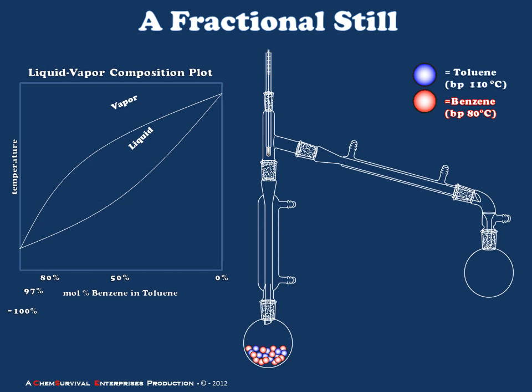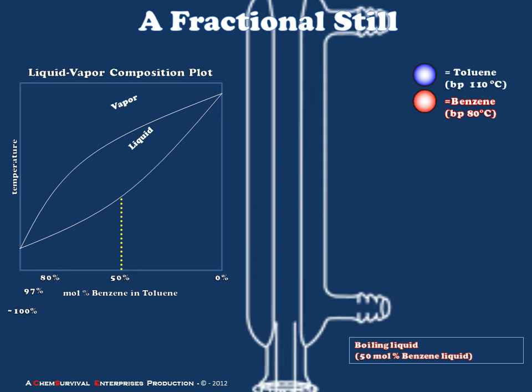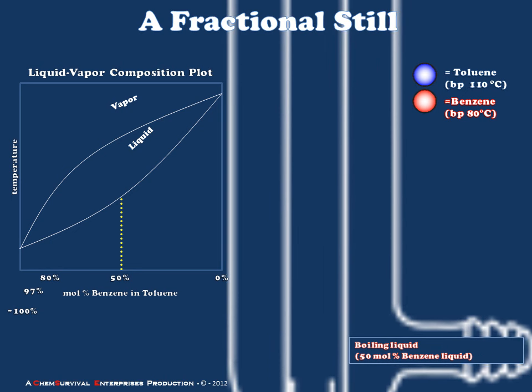The tool used to achieve the same effect is a fractional still, which differs from a simple still only by the addition of a fractionating column. The fractionating column is inserted between the boiling liquid and the still head, and is sometimes packed with solid materials to provide additional surface area. Let's take a look at our fractional still, charged with 50 mole percent benzene in toluene, and consider what will go on inside that fractionating column as the vapor begins to ascend.